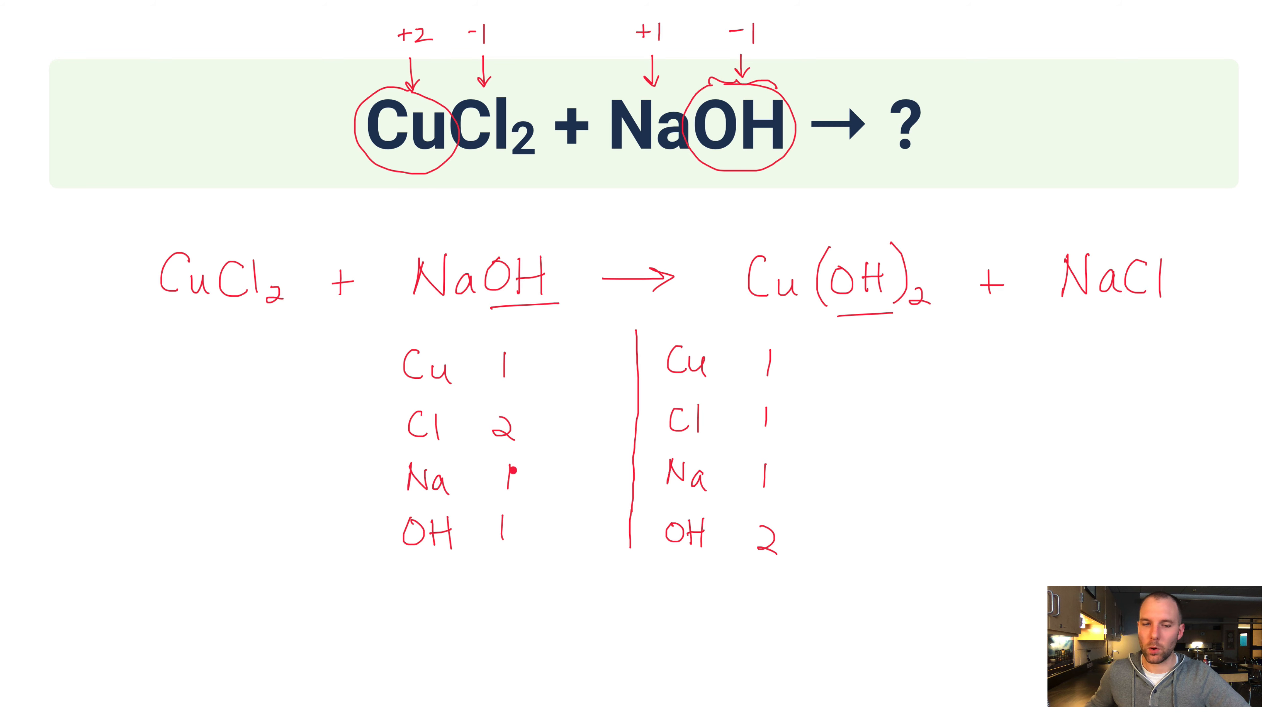So you can start with the chlorines or the hydroxides, it doesn't much matter. On the right side, if you put a 2 in front of NaCl, that'll make each of these a 2. And then if you put a 2 in front of NaOH, that'll make each of these a 2. And that should balance the equation there. So that's it.